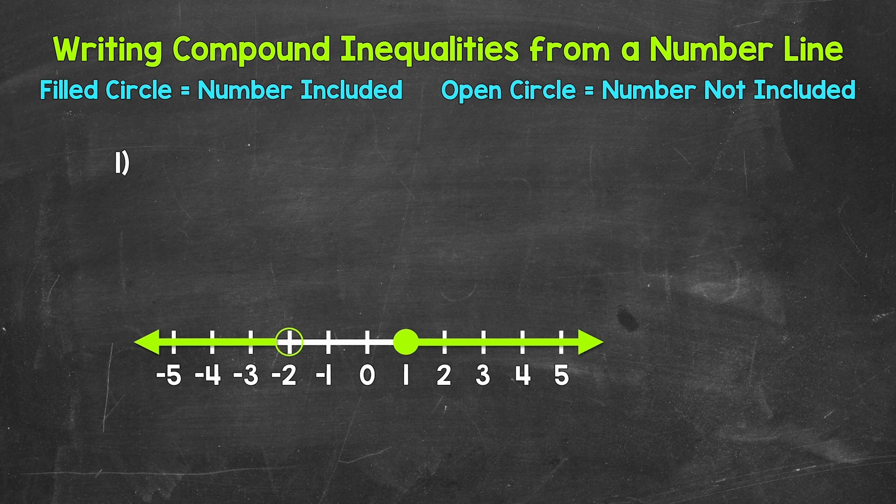Let's jump into number one. The first thing we need to determine when writing a compound inequality from a number line is if it's an OR or AND compound inequality. We can see that we have two separate inequalities graphed here with that gap in the middle, and the arrows are going in opposite directions. So this is going to be an OR compound inequality.